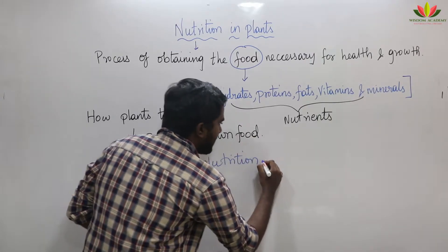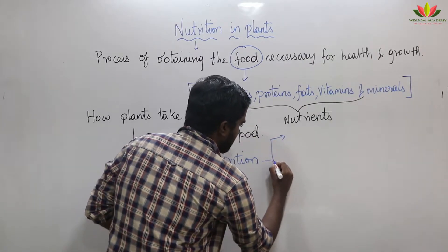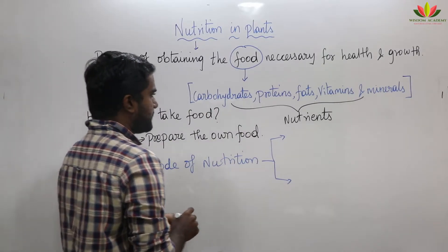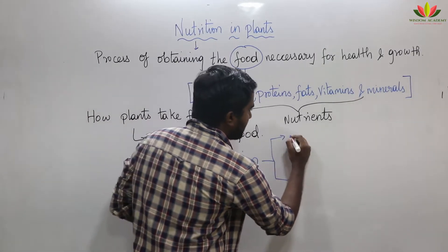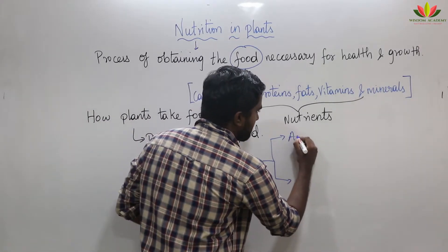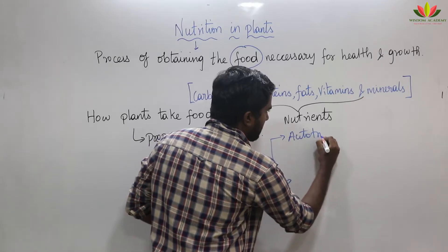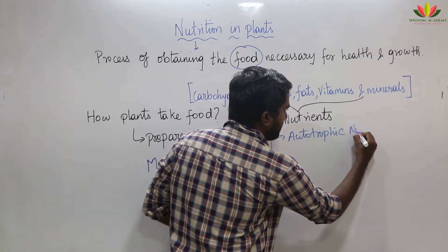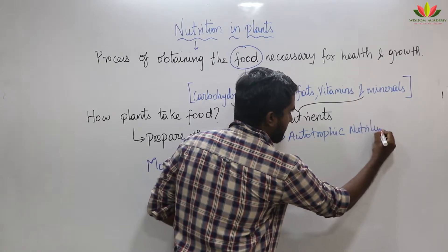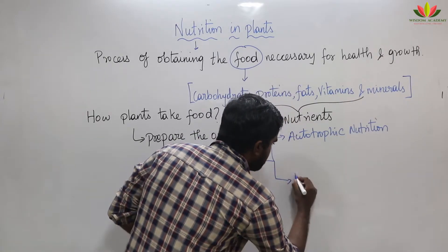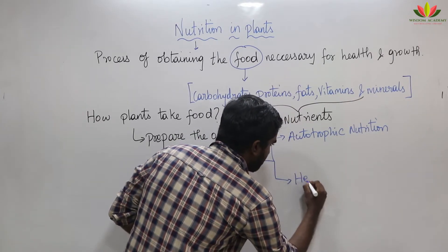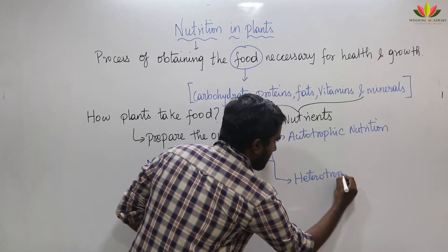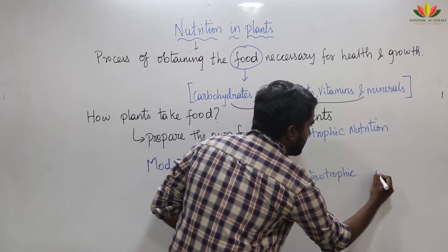In nutrition there are two categories. The first one is autotrophic nutrition and the second one is heterotrophic nutrition.